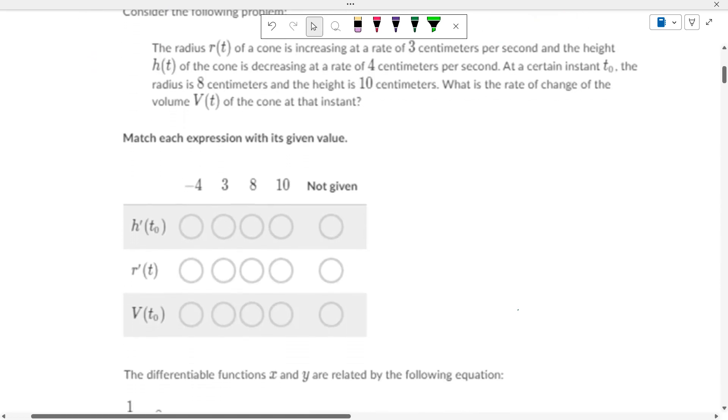Radius increasing at 3, and the height is decreasing at 4. At a certain instance, the radius is 8, and the height is 10. So if you have a derivative, then that's an increasing or decreasing. So height is decreasing at 4, so it's this one.